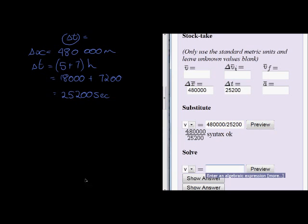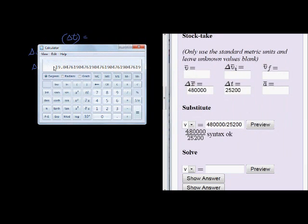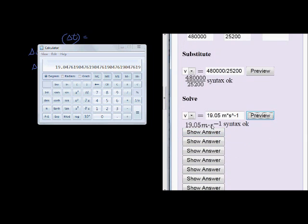And then finally, our velocity is therefore equal to, let's go work that out. We have four hundred and eighty thousand divided by twenty-five thousand two hundred, and that gives us an average velocity of 19.05. Nineteen point zero five, don't forget your units, meters per second. That's how you can write it if you use this method. Let's preview it. Perfect, nineteen point zero five meters per second.